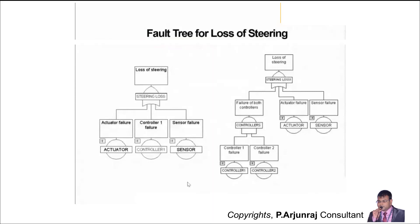Let us see this simple fault tree analysis for a potential loss of steering. It includes the potential failure modes of the system. Here it is related to the controller. The initial level is related to the actuator failure and also to the controller. You have one controller, one failure, and also sensor failure.